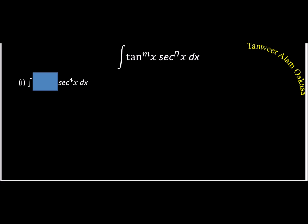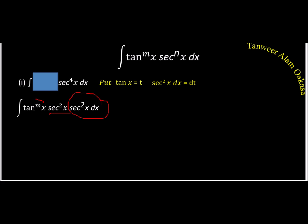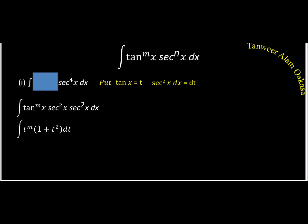If the power of sec is even, this is the best case. I don't have to worry about the tan part — there is only one substitution: put tan(x) = t so that sec²(x)dx becomes dt. For example, sec⁴(x) can be written as sec²(x) · sec²(x), so the tan^m part becomes t^m, and the remaining sec²(x)dx becomes dt. This gives a polynomial in t, making integration very easy.